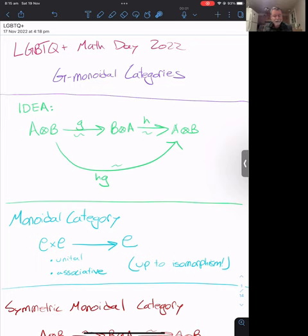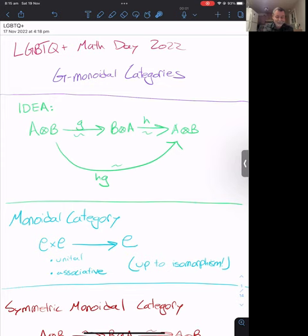Olivia Borgy, who uses she/her pronouns, is a PhD candidate at the University of Melbourne in Australia. Before attending Melbourne, she received her master's in pure mathematics from the University of Washington in Seattle, USA. Olivia's research interests are in homotopy theory, specifically in higher operads and monoidal categories, as well as how they connect to quantum algebra. She is now and always a vocal advocate for diversity, equity, and inclusion in mathematics.